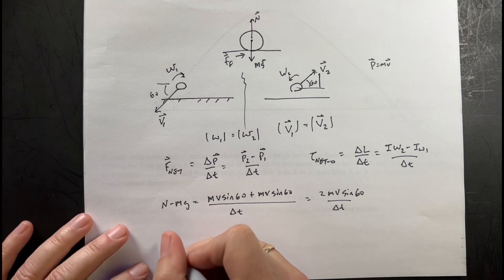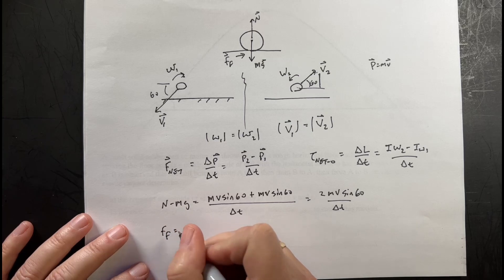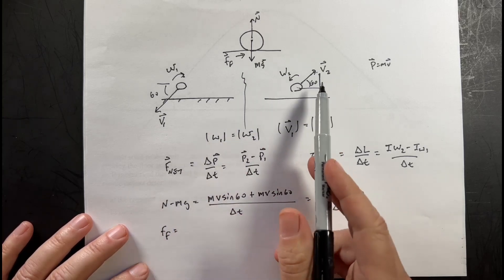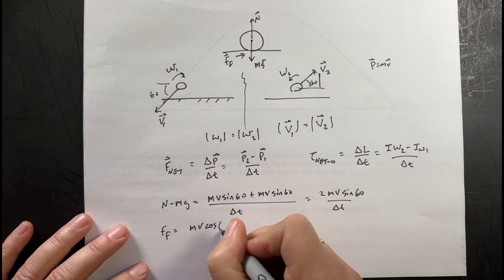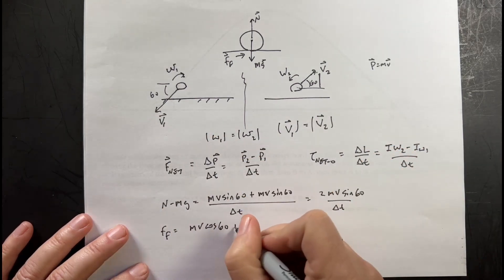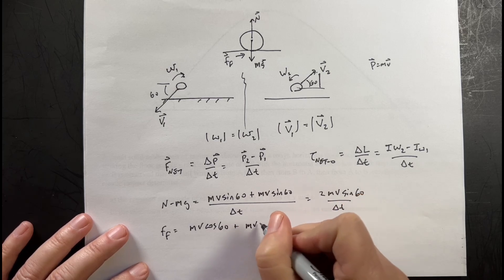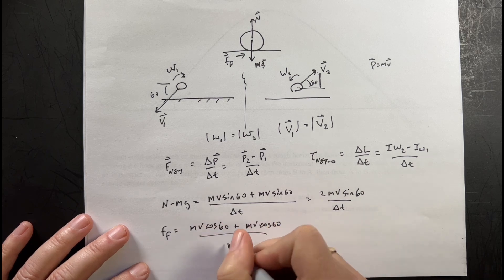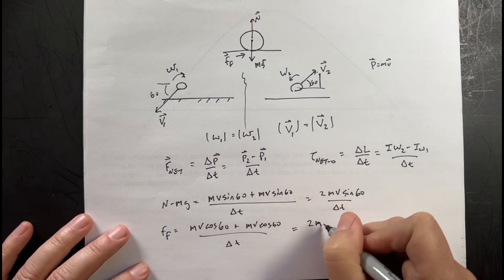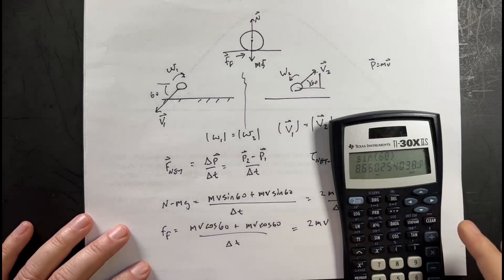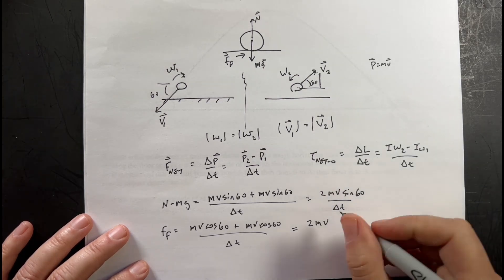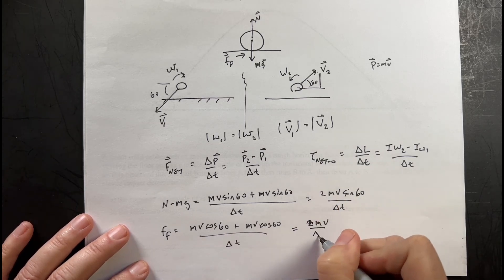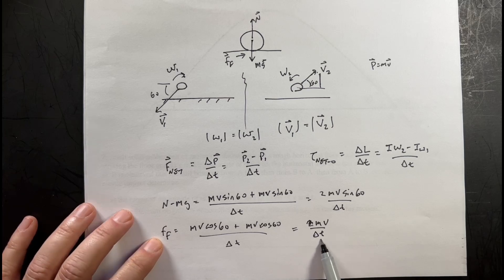In the x-direction, I only have the frictional force ff, and that equals the change in x-momentum. The final x-momentum is mv·cos60 in the positive direction, minus the initial, which is −mv·cos60. So that's 2mv·cos60/Δt. And cosine 60 is one-half, so this simplifies to mv/Δt. So ff·Δt = mv. I still don't know delta t, N, or the friction force.